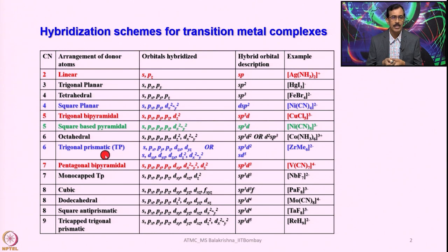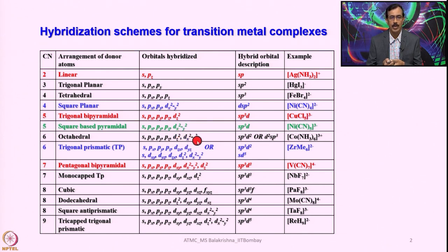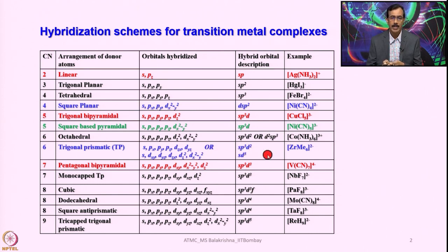When we go to coordination number 6, we come across another important geometry — trigonal prismatic. Here the hybridization is essentially SP3D2, but the D orbitals taken are different: S, Px, Py, Pz, and then XZ and YZ — not DZ² and DX²-Y² as preferred in octahedral complexes. When early metals exist in their highest oxidation state, we can consider inner D orbitals instead of P orbitals, giving SD5 hybridization. This is common with high-valent metal ions having D1, D2, D3 configurations. With coordination number 7, we have pentagonal bipyramidal geometry.